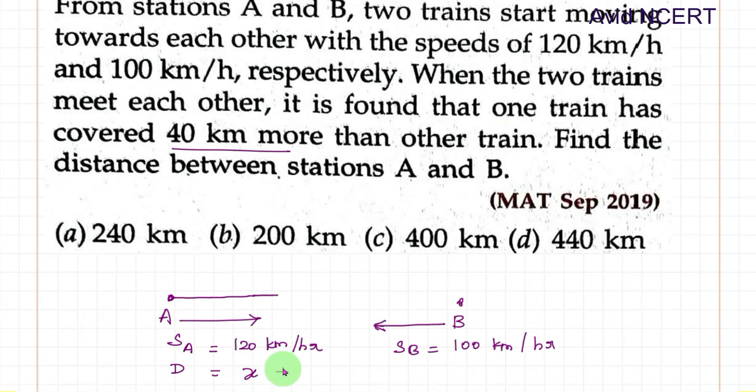For example, if x is the distance travelled by train B, then train A would have travelled 40 km more than that. So if this is travelled x km, then train A distance equals x km plus 40 km, which is x plus 40.